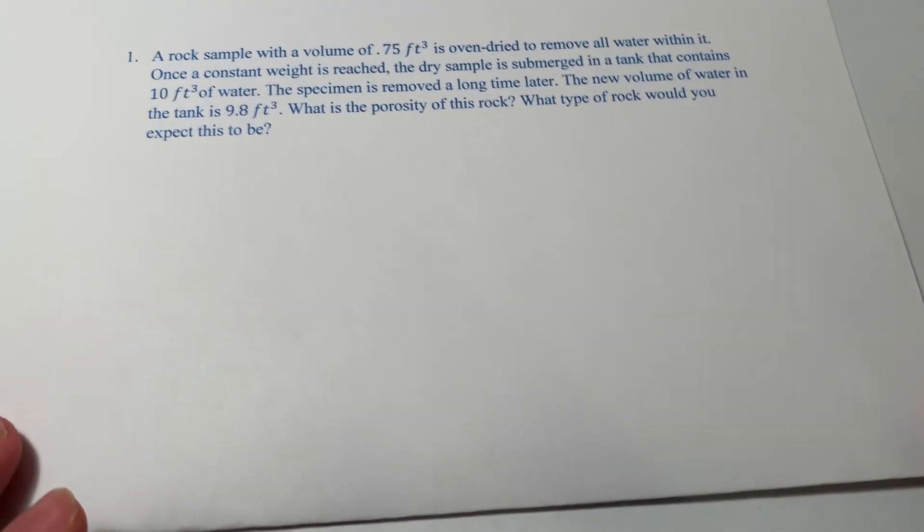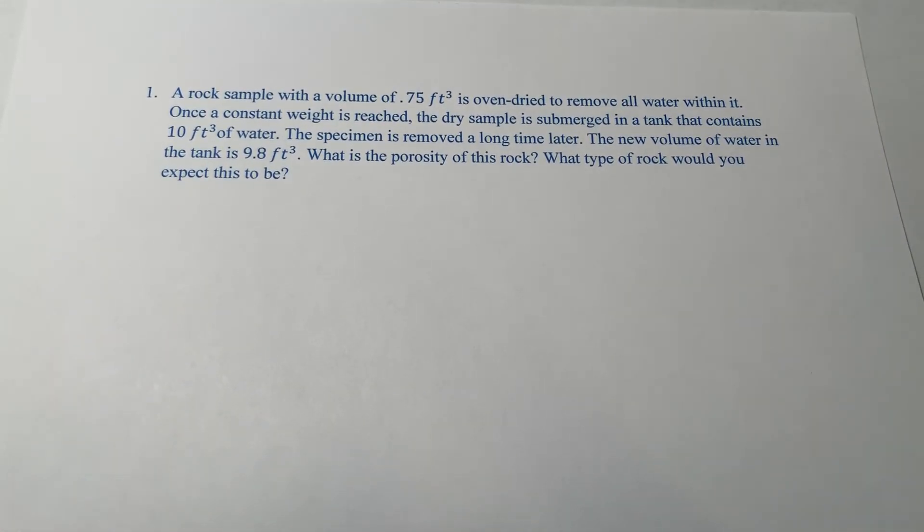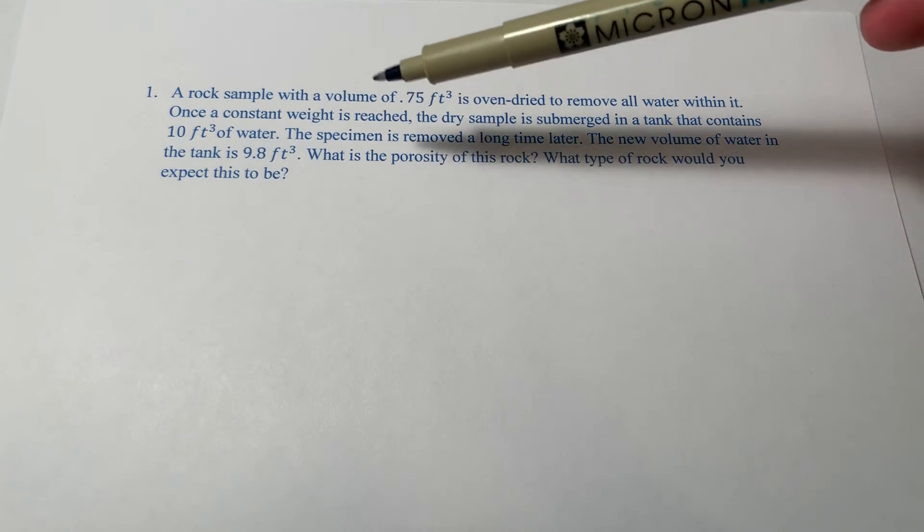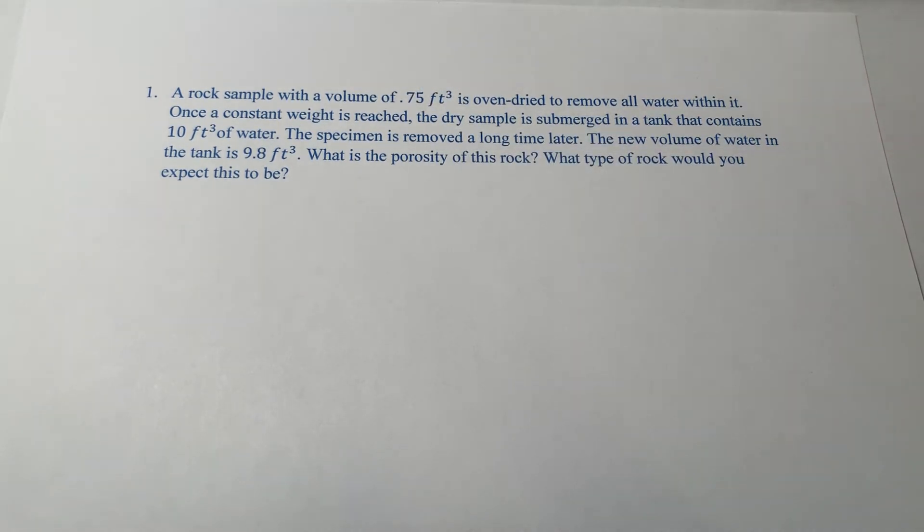Finally, I thought I'd round it out with a little bit of an example here for us to work through, make sure we understand what porosity is. So the setup is this. A rock sample with a volume of 0.75 cubic feet is oven dried to remove all the water within it. Once a constant weight is reached, so constant weight, of course, would be indicating that you're monitoring the weight as it's dried. And when it stops changing, you know that you've completely removed all the water within it. It's evaporated out and it's just a solid. The dry sample is submerged in a tank that contains 10 cubic feet of water. The specimen is removed a long time later. That long time should be an indication that we've reached a steady state. It's no longer soaking in more water. It is completely saturated. The new volume of water in the tank is 9.8 cubic feet. What is the porosity of this rock and what type of rock would you expect this to be?